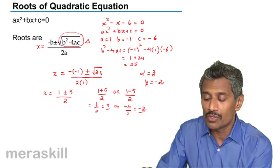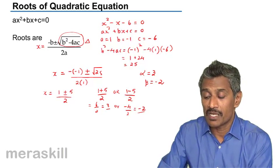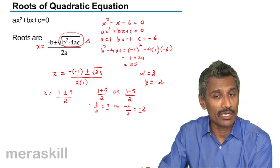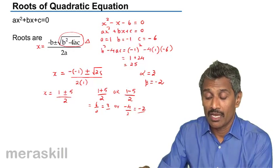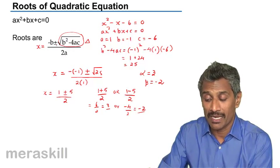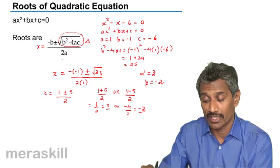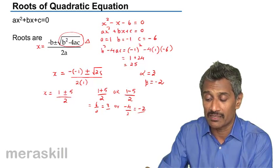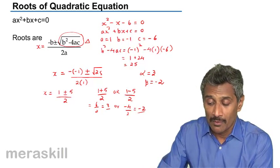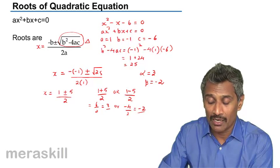One root is (-b + √(b² - 4ac))/2a, and the other root is (-b - √(b² - 4ac))/2a. The -b and the denominator remain the same, but the sign between them is opposite.